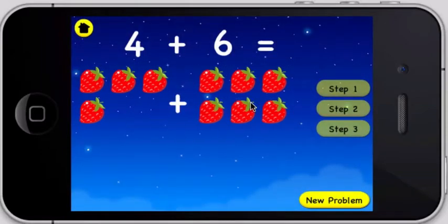What is 4 plus 6? Count the number of strawberries on the left. 1, 2, 3, 4. Count the number of strawberries on the right. 1, 2, 3, 4, 5, 6.